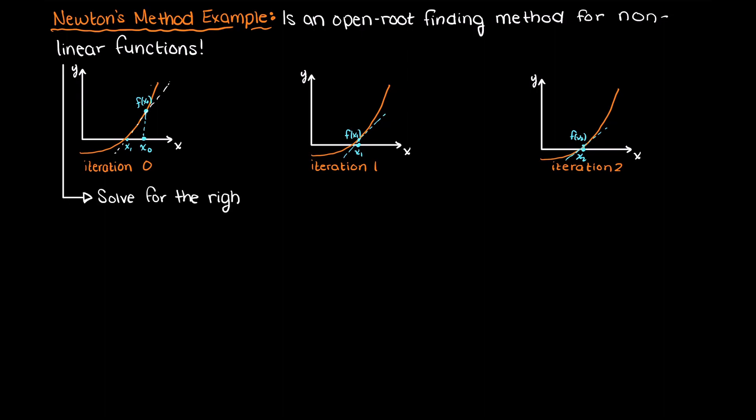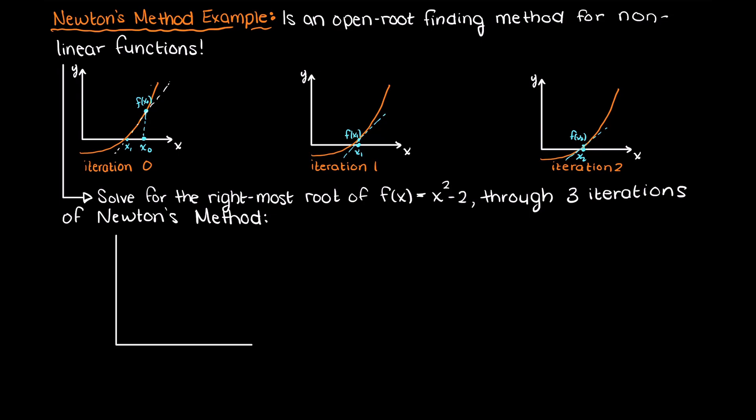Alright, so we are told to solve for the rightmost root of the function here, f(x) is equal to x squared minus 2, through three iterations of Newton's method. So, the function that we are given is just a parabola that is shifted in the negative y direction.